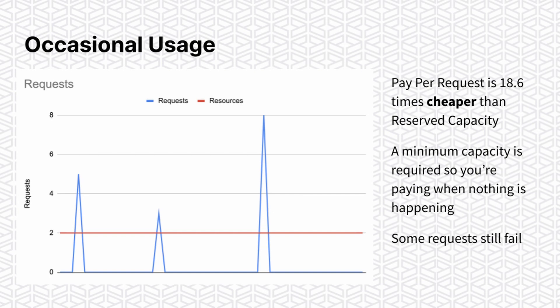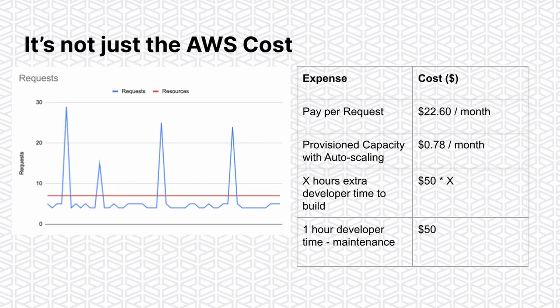Those are the examples and my opinion on which payment method to go with. But with the last three, when calculating the cost ratio, it's not just about the AWS DynamoDB cost. In the example with consistent usage and short spikes that didn't trigger auto scaling, you can work out exactly what it'll cost per month: with pay per request it's $22.60 a month, but with provisioned capacity it's only $0.78. Looking at that, you'd instantly decide to go with provisioned capacity — but there are extra costs involved.